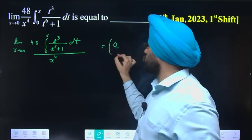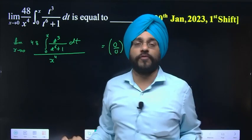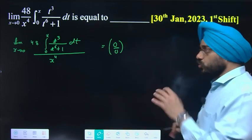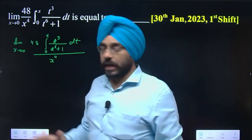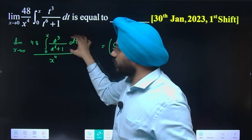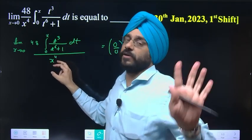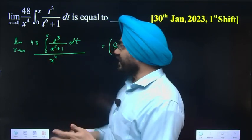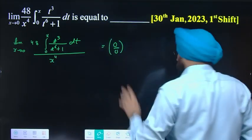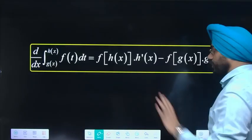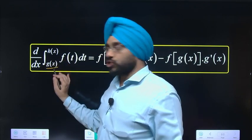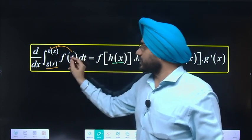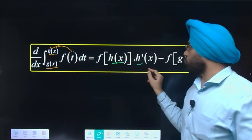If 0 by 0, then L'Hospital rule will apply. L'Hospital means numerator term separate differentiation, denominator term separate differentiation. For integral term differentiation, you put the upper value f(h(x)) into this term, times differentiation h'(x).